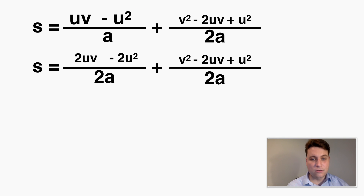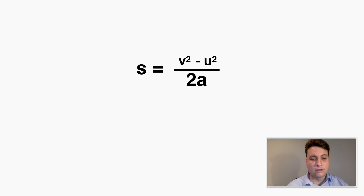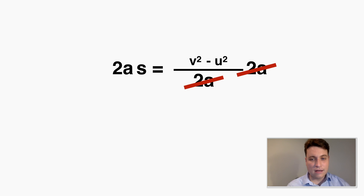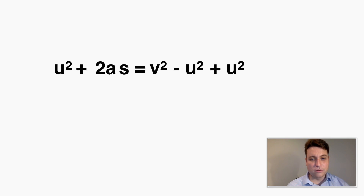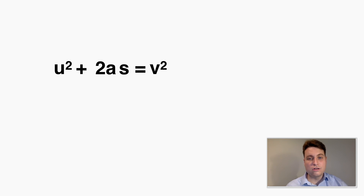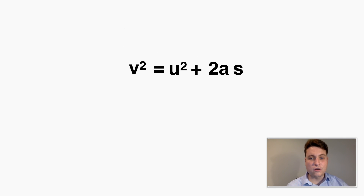Simplifying the algebra, I multiply both sides by 2a and cancel terms. Adding u squared to both sides yields v squared equals u squared plus 2as, which is the fourth kinematics equation. This proof is based on the first two equations, which themselves are based on geometry.